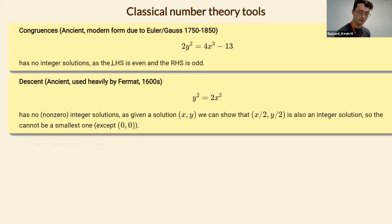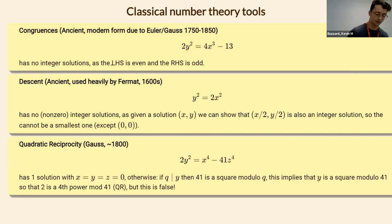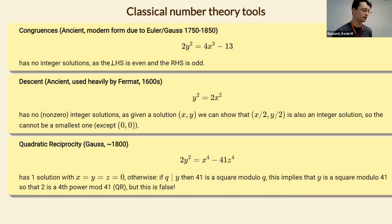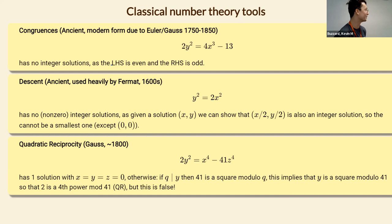The final classical technique is a bit harder — quadratic reciprocity, due to Gauss, written down about 200 years ago. It relates primes being squares modulo other primes, to the same problem with the two primes swapped. You can often prove non-solvability of equations this way. Here's an equation with x to the fourth instead of x cubed, and quadratic reciprocity gives a proof that this equation is insoluble.